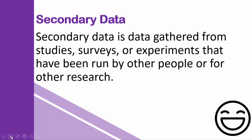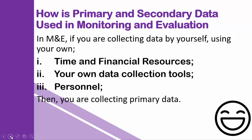Secondary data is data gathered from studies, surveys, or experiments that have been done by other people already. Primary and secondary data can work hand in hand, but secondary data tends to come into play especially when collecting certain information is too expensive or beyond your scope. You might use other people's work — but don't forget to cite it, especially work done by other academicians.